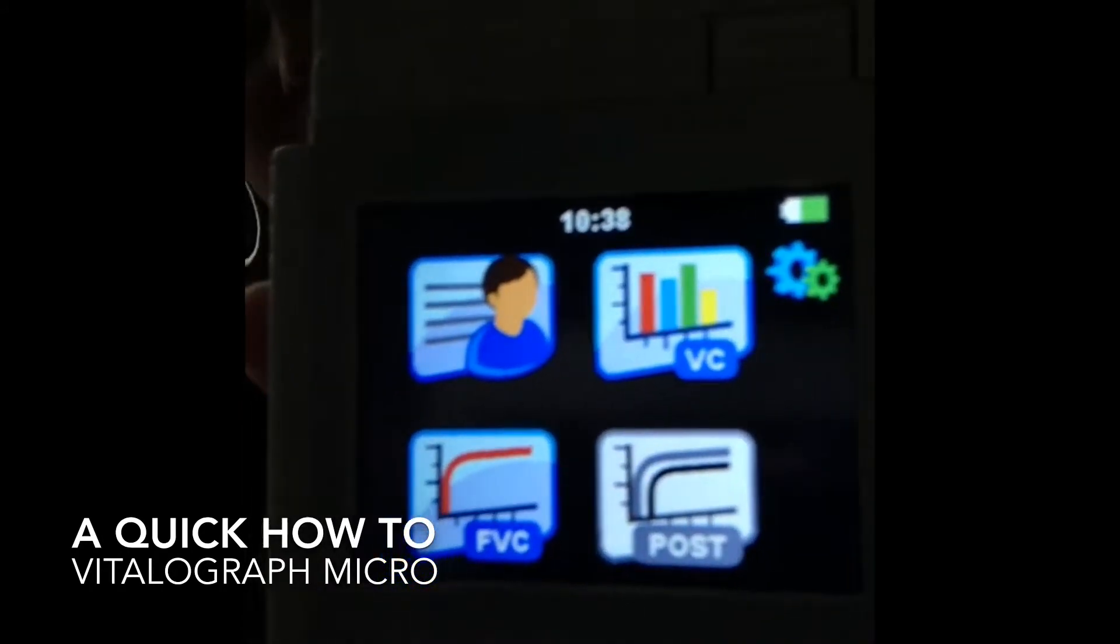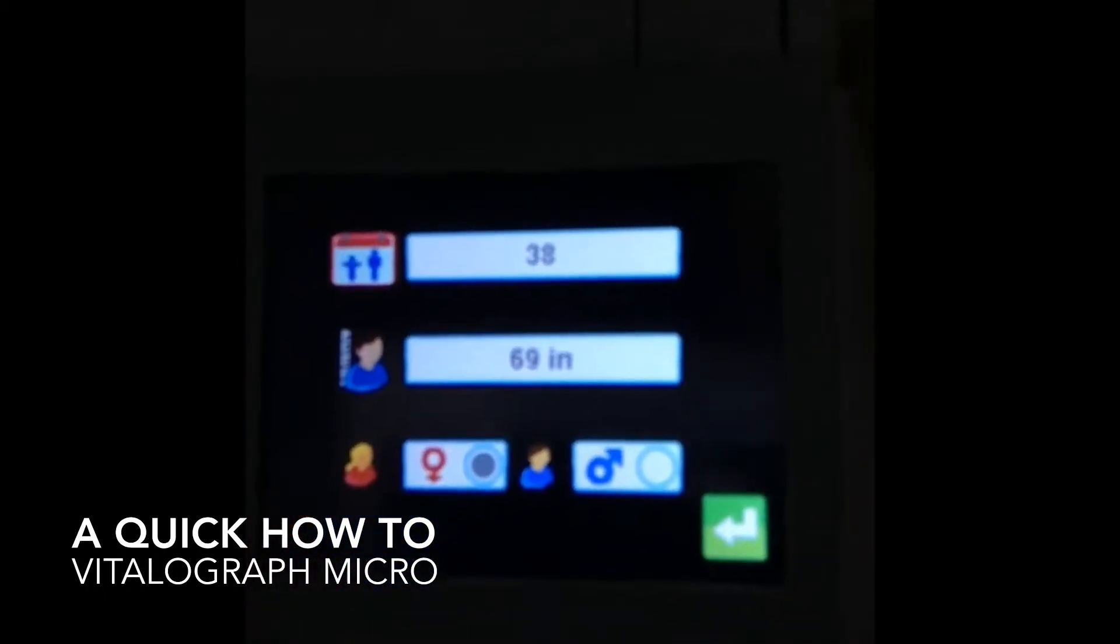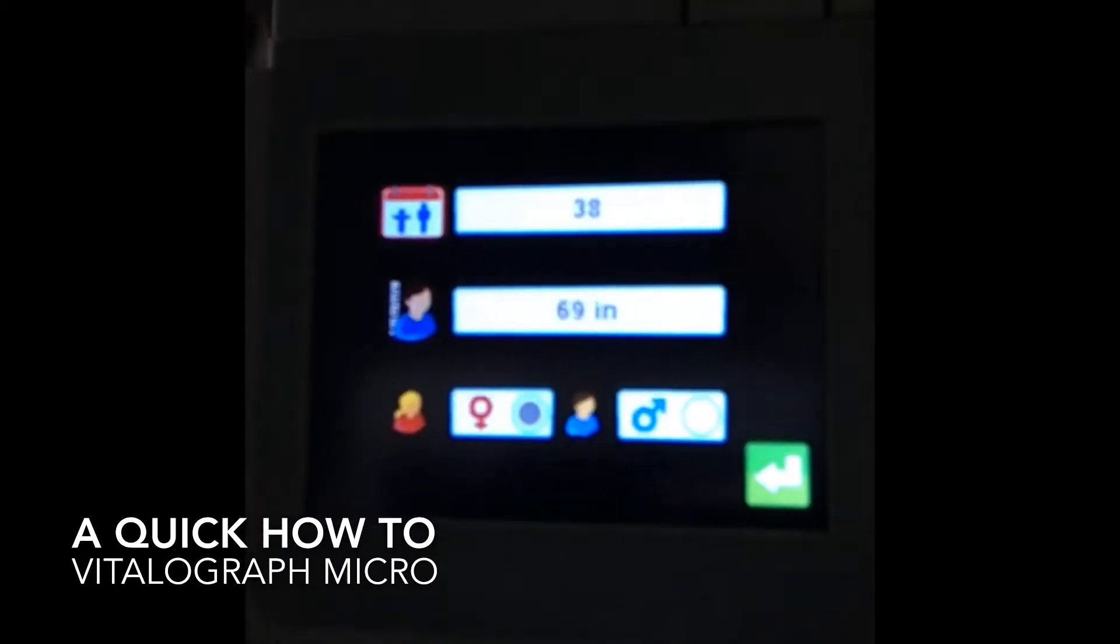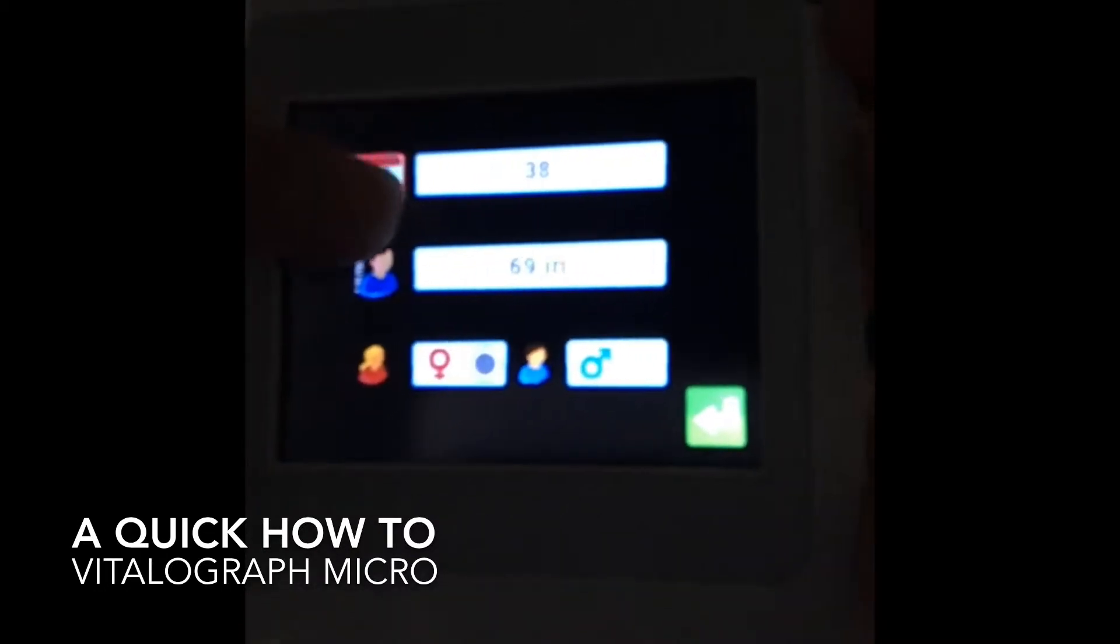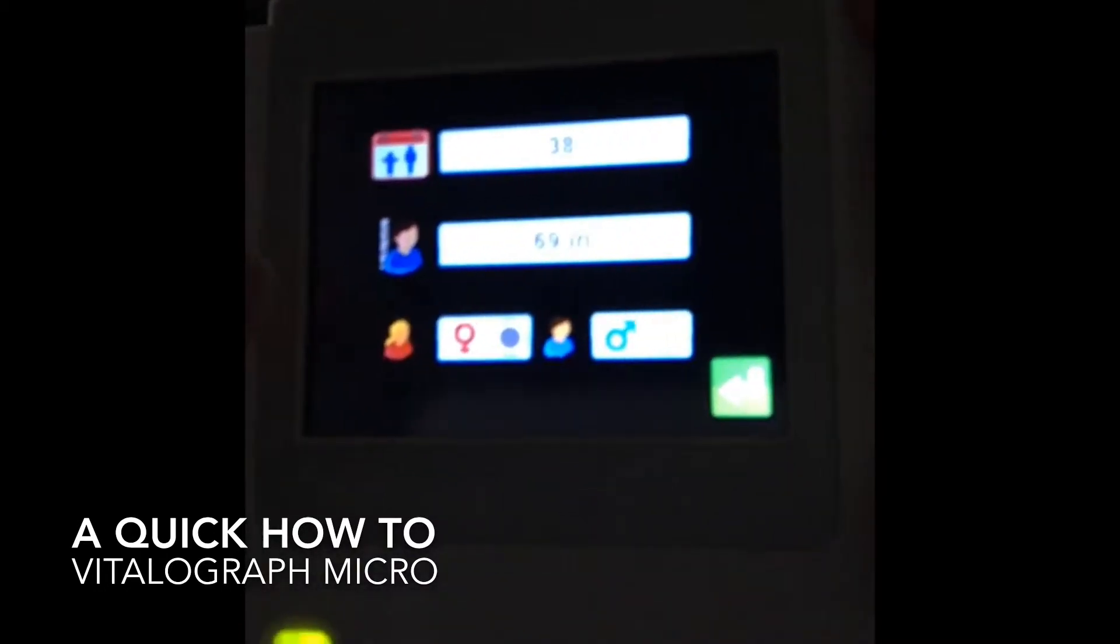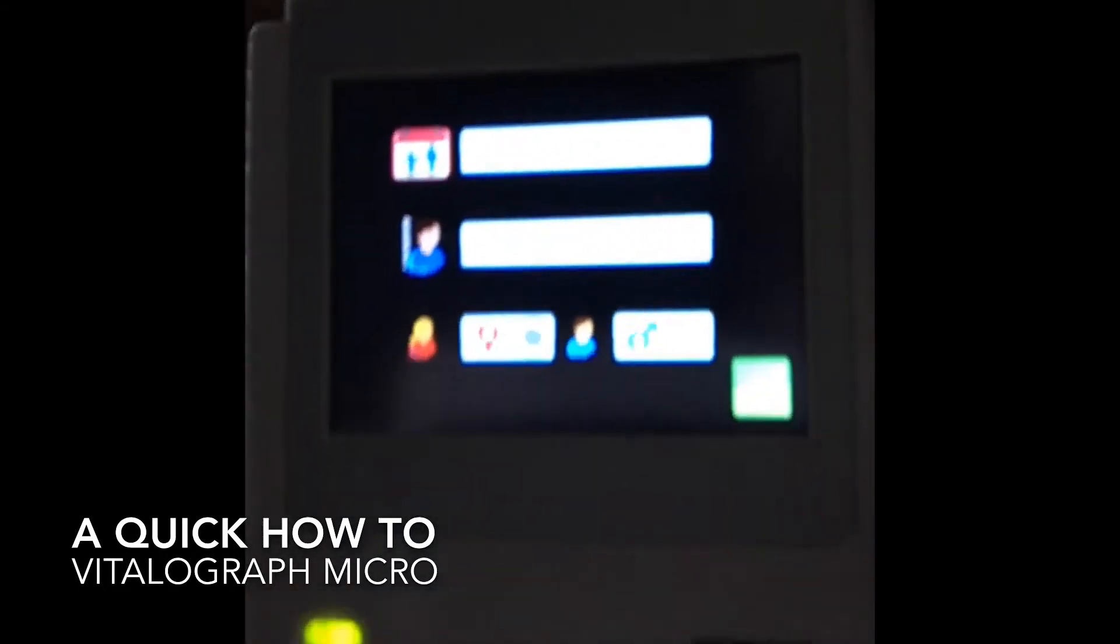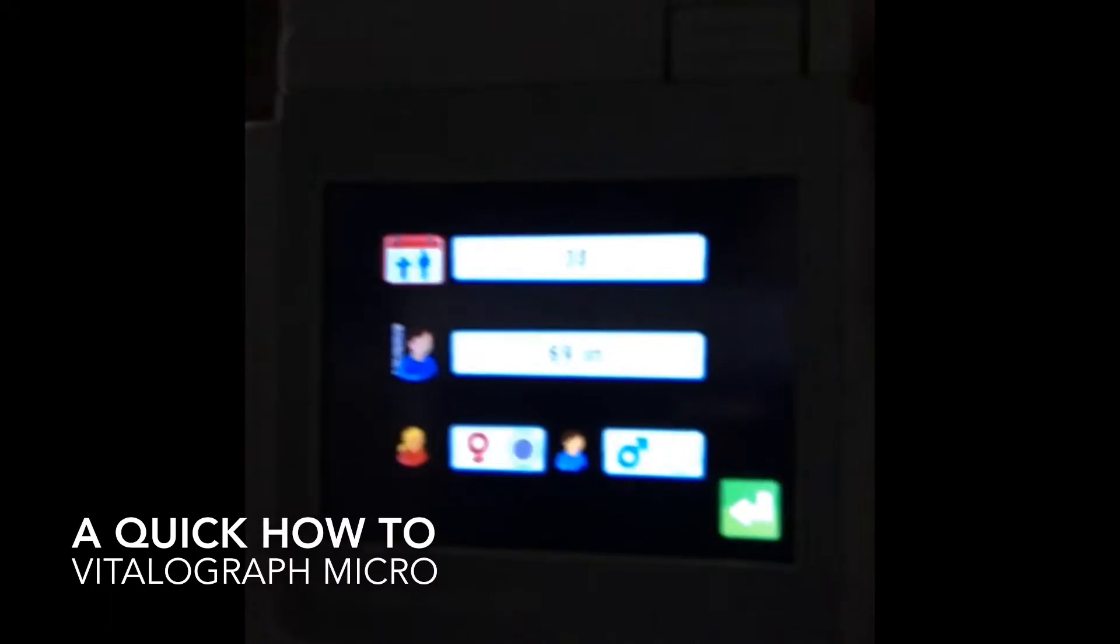Now, this device does not require much information at all. You're simply going to go to the patient icon, and I apologize that the device is almost backward on the screen for you, but you essentially just need to enter the patient's age here in this icon, and their height, and then select what their sex is. I'm already entered here in the device, my height and weight.